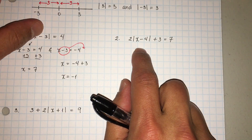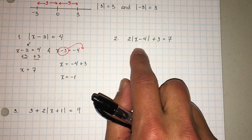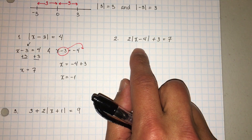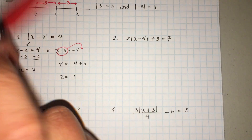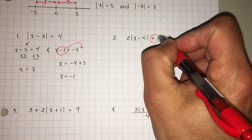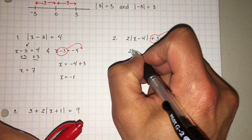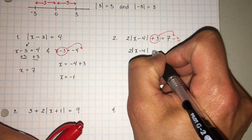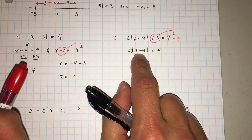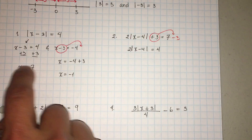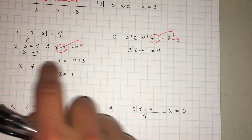Let's go ahead and do the second one. Anytime you're solving an equation, you're undoing the order of operations — en cualquier tiempo que están resolviendo ecuaciones se están deshaciendo de la orden de operaciones. So what we want to undo first is addition or subtraction. We're going to undo the positive three — it goes to the other side and becomes a negative three. So that becomes two times the absolute value of x minus four is equal to four. And what you want to do is isolate the absolute value.